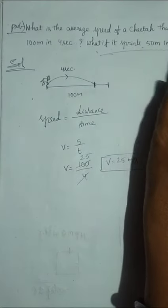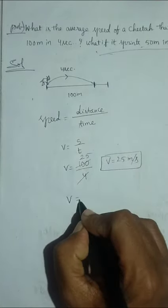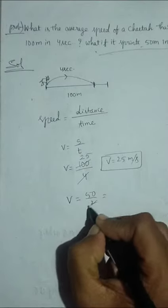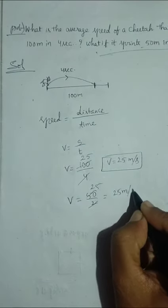And what is the other one? What if it sprints 50 meters? Same formula we can use: 50 by 2 is nothing but 25, so 25 meters per second.